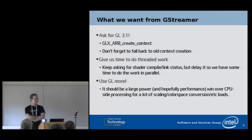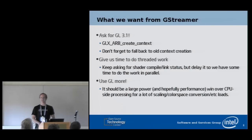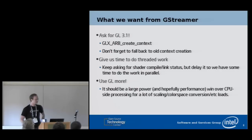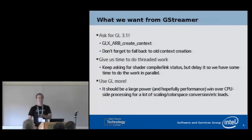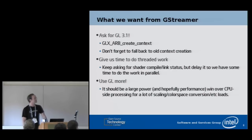To bring things on topic: what do we want from GStreamer? The most important thing is to ask for GL 3.1. If you have the option of using any version of GL, please use 3.1 or better. If you ask for 3.1, we're allowed to give you a 3.3 or 4.0 context. But we can't give you one of those unless you ask for at least 3.1, because of the deprecated functionality that was removed. However, don't forget to fall back to creating an old context if 3.1 is not supported, because the implementation is allowed to say no. Also, give us time to do threaded work by reducing GL gets — once we do threaded dispatch, every GL get will be a synchronization point, though it seems unlikely to be a problem for GStreamer.